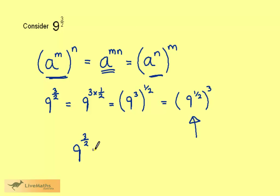If we consider 9 to the 3 over 2 equals 9 to the power 1 half, then cubed. 9 to the power 1 half is the square root of 9, which we then cube.